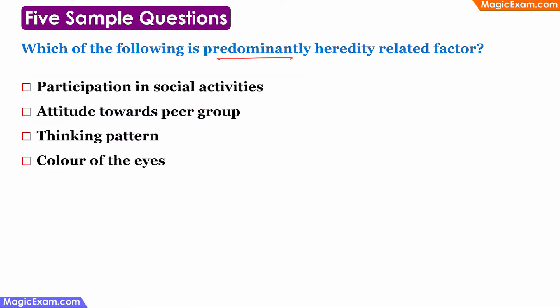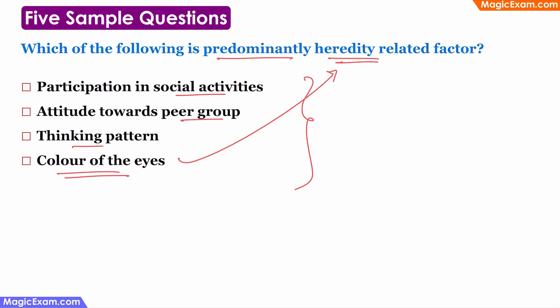Which of the following is predominantly a heredity-related factor? Participation in social activities, attitude towards a peer group, and thinking patterns are not written in anyone's genes or DNA. However, color of the eyes is definitely affected by heredity — if parents, grandparents, or great-grandparents have green colored eyes, there are chances the child will also have green colored eyes, as physical traits are transmitted through genes and may sometimes skip a generation. Therefore, color of the eyes is predominantly affected by heredity.